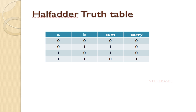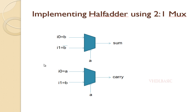This is how we need to look at and understand the truth table before implementing the half adder using 2:1 muxes. If A is 0, B will be assigned to sum; if A is 1, B_bar will be assigned to sum. In the case of carry: if A is 0, 0 will be assigned to carry; if A is 1, B will be assigned to carry.